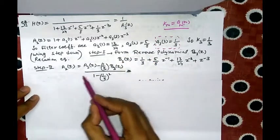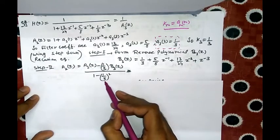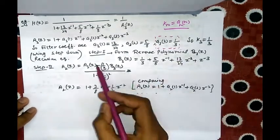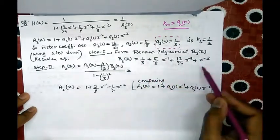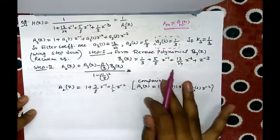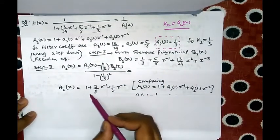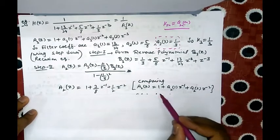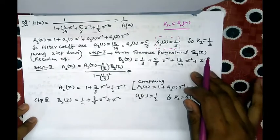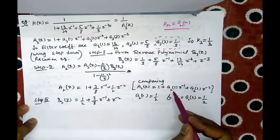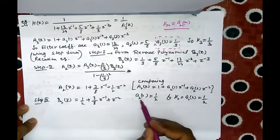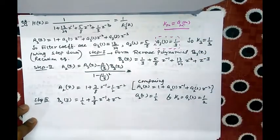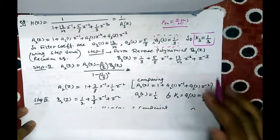Finding A2(z) using the step-down recursion: A2(z) = [A3(z) − k3·B3(z)] / (1 − k3²). Here k3 = 1/3. Substituting the values of A3(z) and B3(z) and solving, we get A2(z) = 1 + 3/8·z⁻¹ + 1/2·z⁻². Comparing with the standard form 1 + a21·z⁻¹ + a22·z⁻², we get a21 = 3/8, a22 = 1/2. And k2 = a22 = 1/2, which is our second lattice (reflection) coefficient.